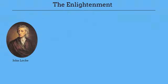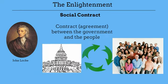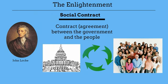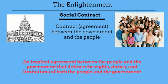Locke and the Enlightenment had another idea that influenced the Founding Fathers: the concept of social contract. Locke argued that a contract should exist between the government and the people, and he called this the social contract. A social contract is an implied agreement between the people and the government that defines the rights, duties, and limitations of both the people and the government.